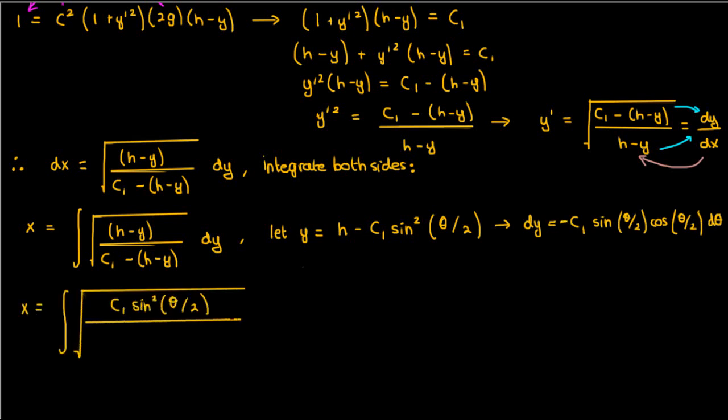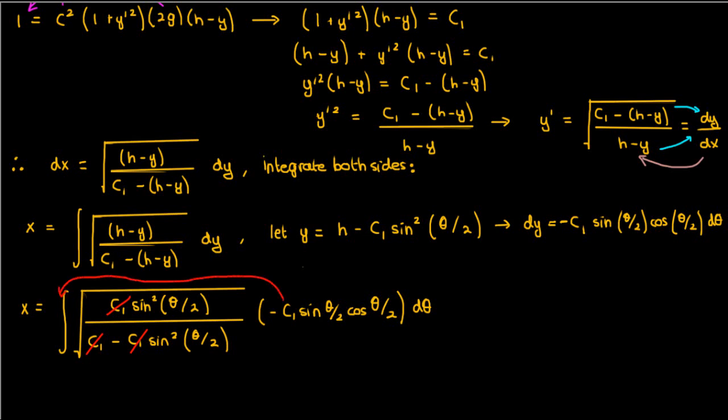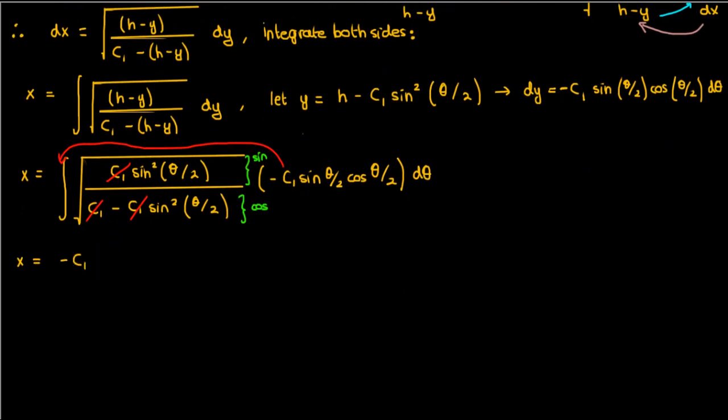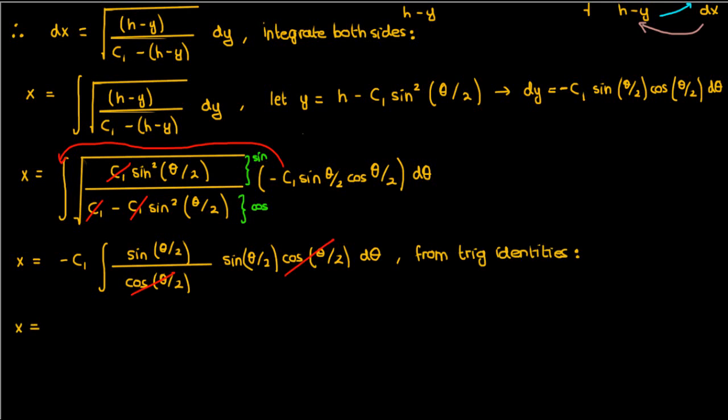If we plug this into the integral here's what we'll get. Now the c1's in the square root cancel, and we can also take this lone c1 outside the integral. The square root of sine squared is just sine, and the square root of (1 minus sine squared) is just cosine, in which case we end up with x equals negative c1 times the integral of sine(theta/2) over cosine(theta/2) times sine(theta/2) times cosine(theta/2) d theta. The cosines cancel and we'll end up with just the integral of sine squared, but using trig identities we can also write sine squared(theta/2) as just half of (1 minus cosine theta).